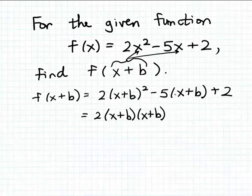Now we also want to multiply minus 5 times x plus b. So as I mentioned in the previous example, this is just a simple application of the distributive property. So we'll multiply minus 5 times x to give us minus 5x. And then minus 5 times b is minus 5b.